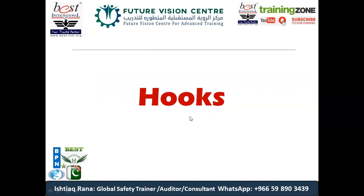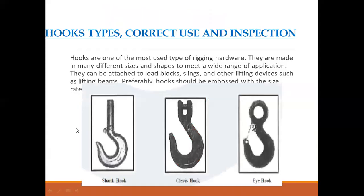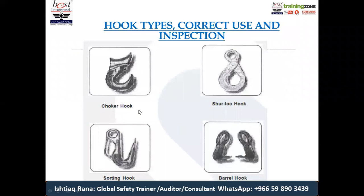Let's talk about hooks — without hooks, all other lifting gears have zero value. Hooks are one of the most used types of rigging hardware, made in many sizes and shapes for a wide range of applications. They can be attached to load blocks, links, or lifting devices such as lifting beams. Hooks should be embossed with their size and rating. Types include: shank hook, clevis hook, eye hook, choker hook, shorelock hook, barrel hook, and sorting hook.